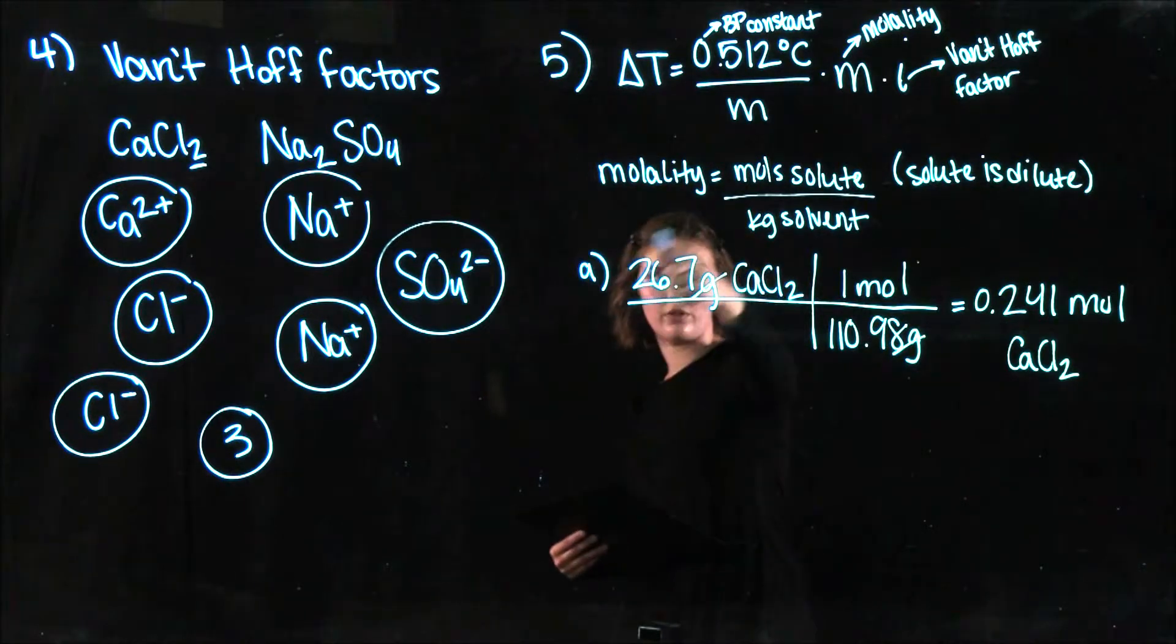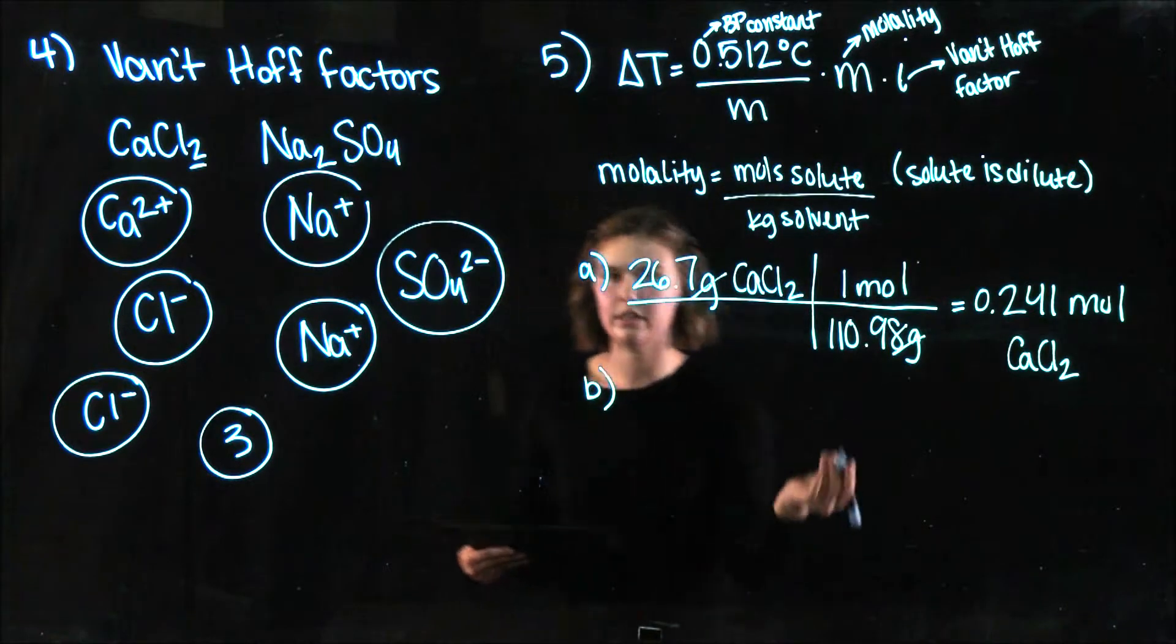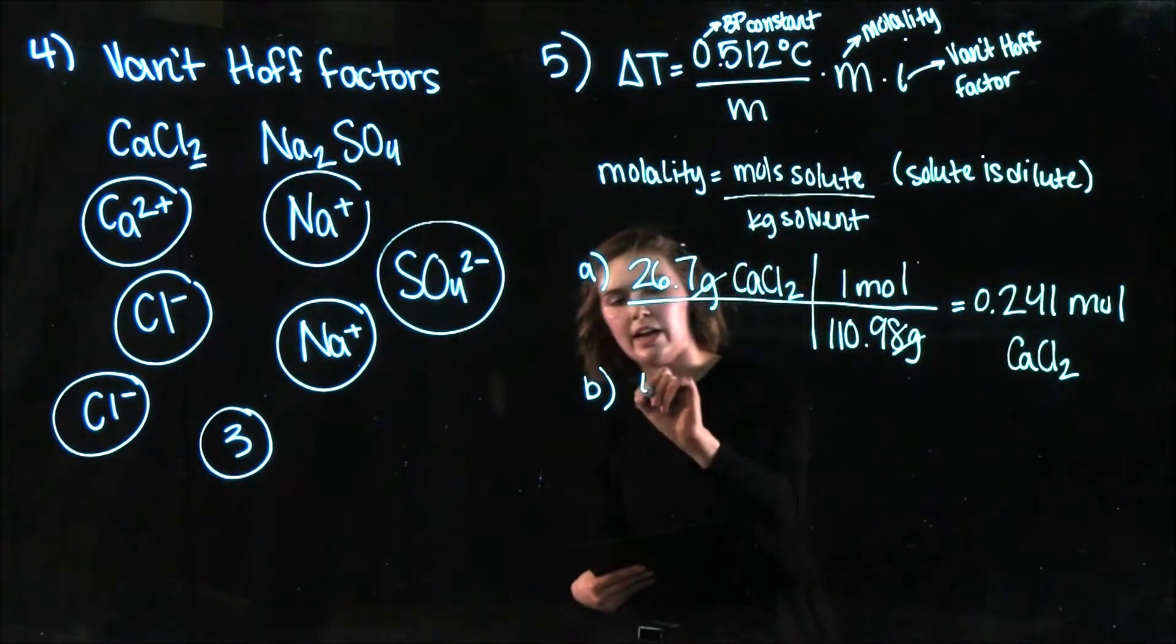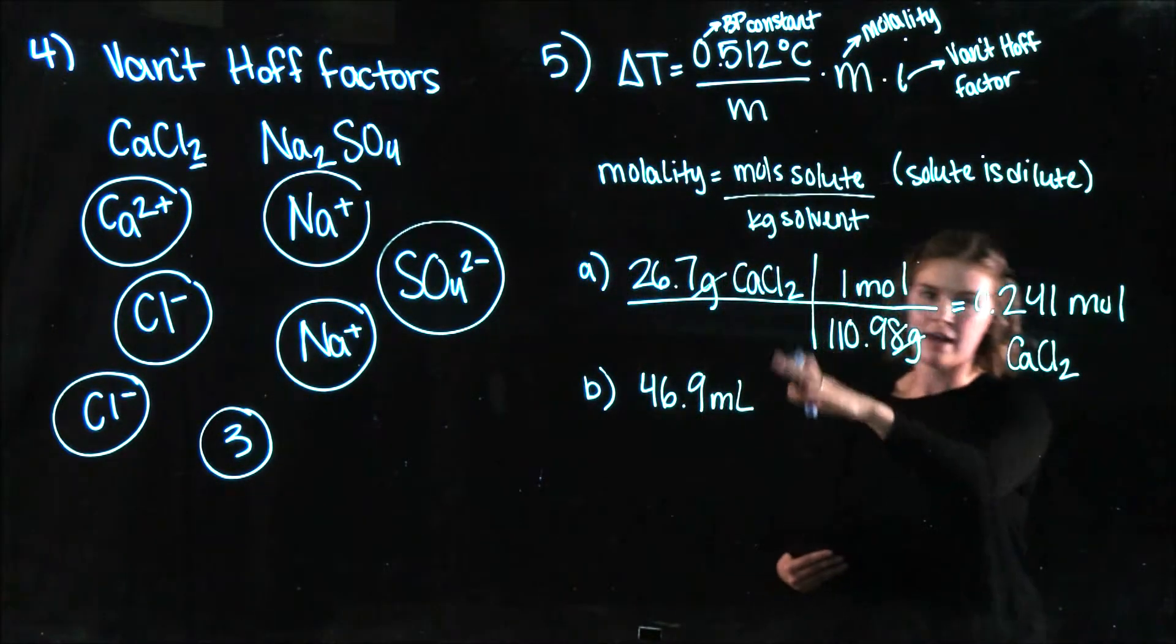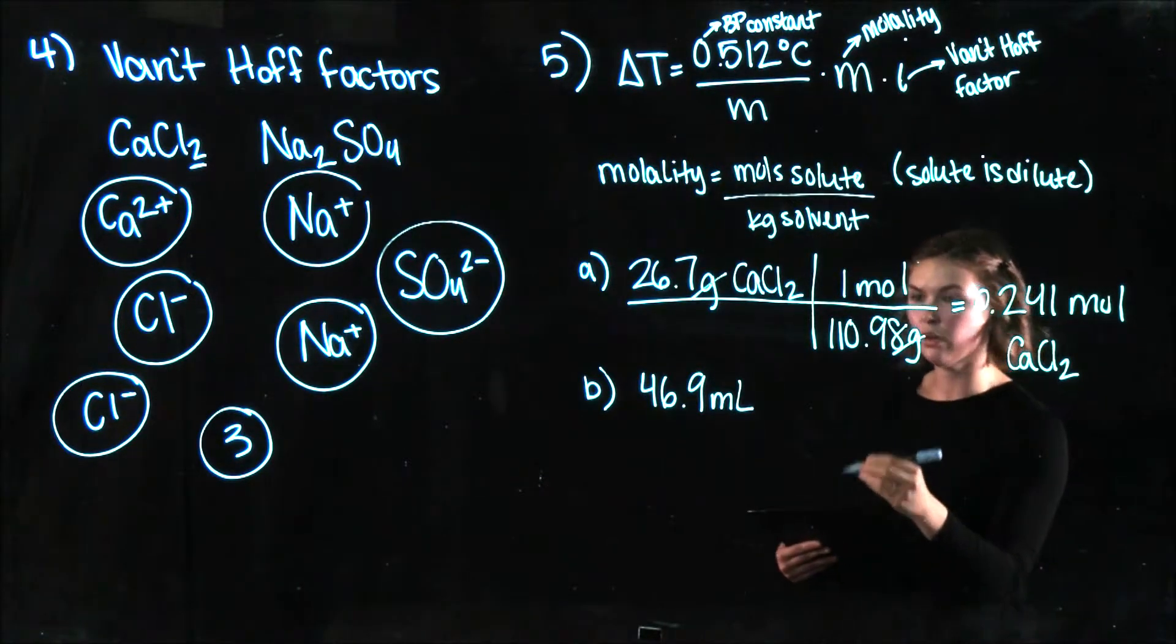So then for the next step I'm just going to find my kilograms of solvent. So your solvent in this case is water. That's pretty common. So we're going to take, I'll say I have 46.9 mils. These numbers are made up. You're going to have different numbers.